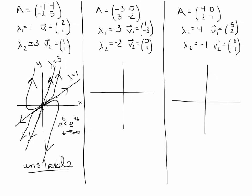The second matrix has negative eigenvalues, so arrows point into the origin instead of away. The first eigenvector is (1, -3), and we draw a line through that point and the origin. Since the eigenvalue is negative 3, arrows go in. The second eigenvector is (0, 1), which is just the y-axis, and it's associated with eigenvalue negative 2, so arrows go in there too.